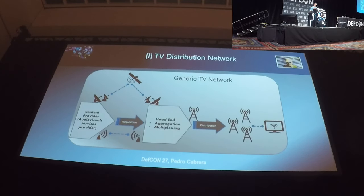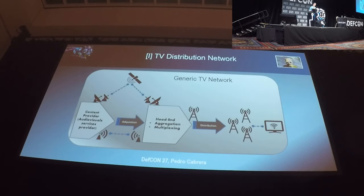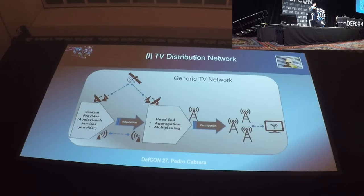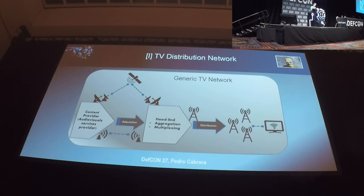Let me introduce a very generic, simplified TV network diagram to share the key elements. Generally, content is on the left — think about reporters traveling with satellite dishes transmitting content in real time through an acquisition network to the main head end. They receive content from TV studios, reporters, and third parties, and process it to be available on all TVs. For a national TV channel, all TVs in the country must receive the signal through a distribution network.